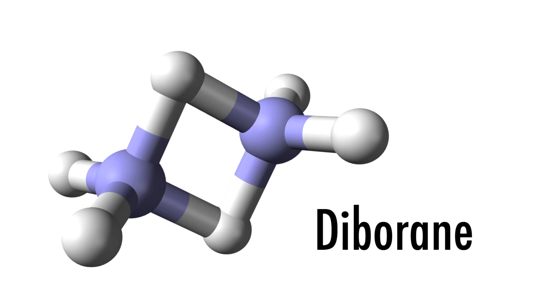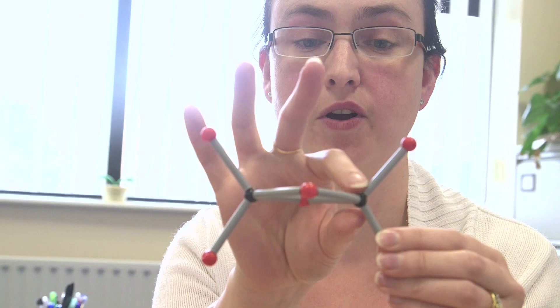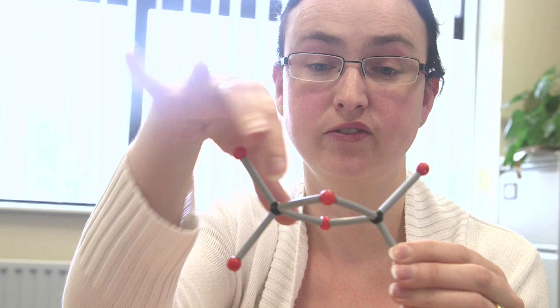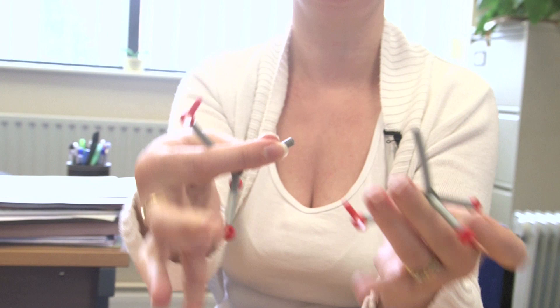So this is the first one — diborane. We've got these boron atoms here in black, and then we've got these bridging hydrides — two of those — and four terminal hydrides. It's almost like two BH3 units coming together. And they can make bigger structures like this, which is tetraborane.